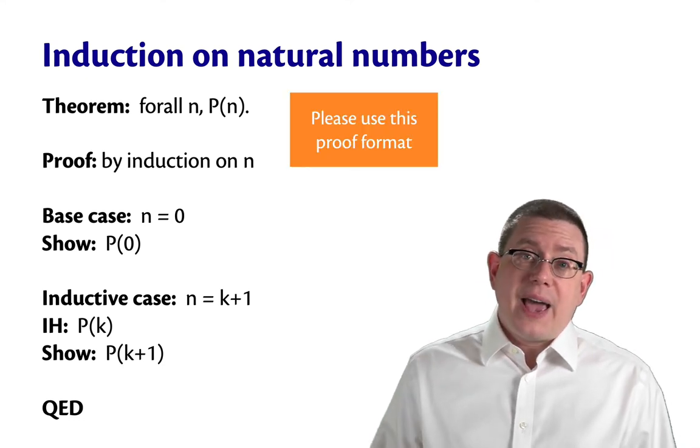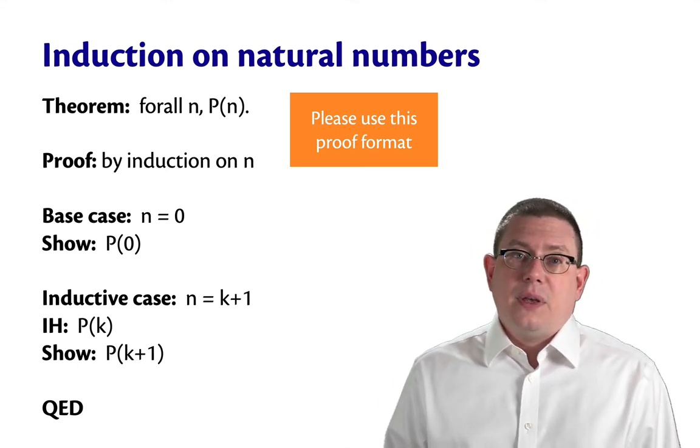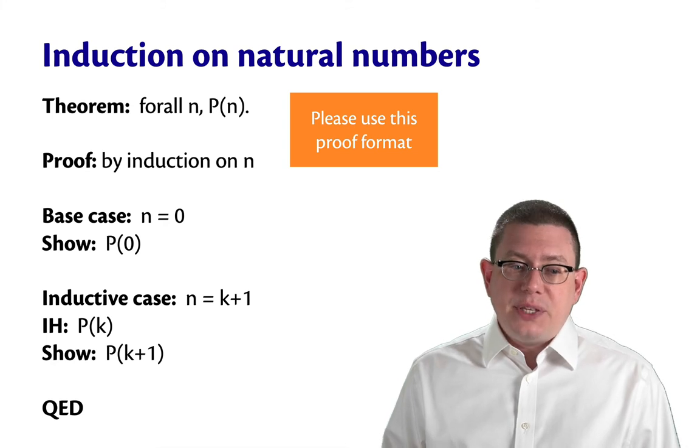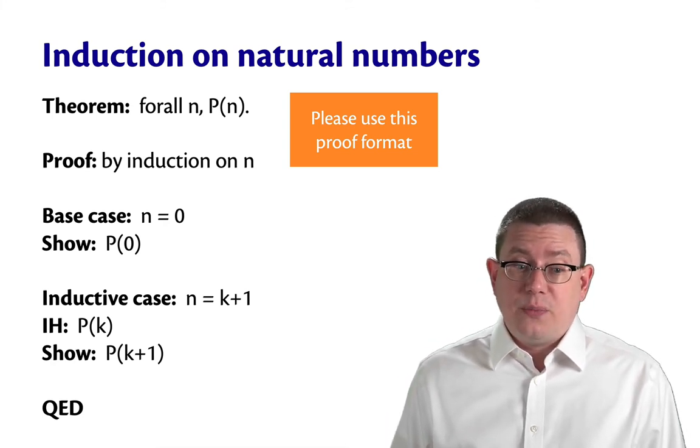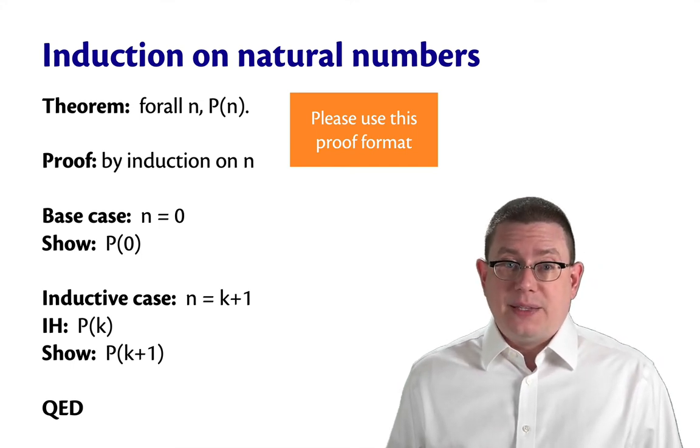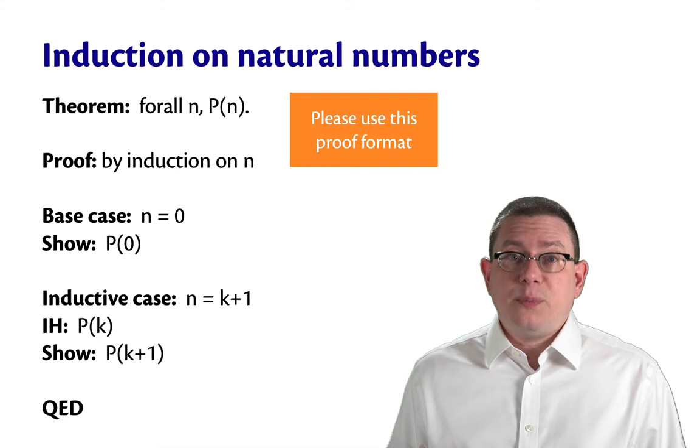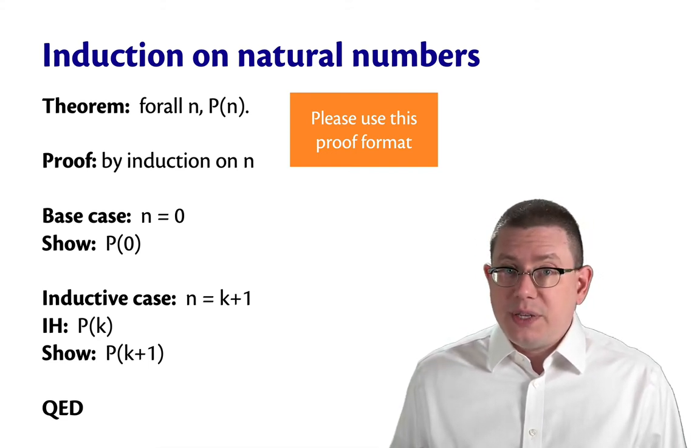So I want to ask you once more to use this proof format, at least for 3110. And by that, I mean explicitly state what the property P is that you're trying to prove. Explicitly state what the base case is. And explicitly state all of that information about the inductive case. What the smaller number is, in this case it's K.